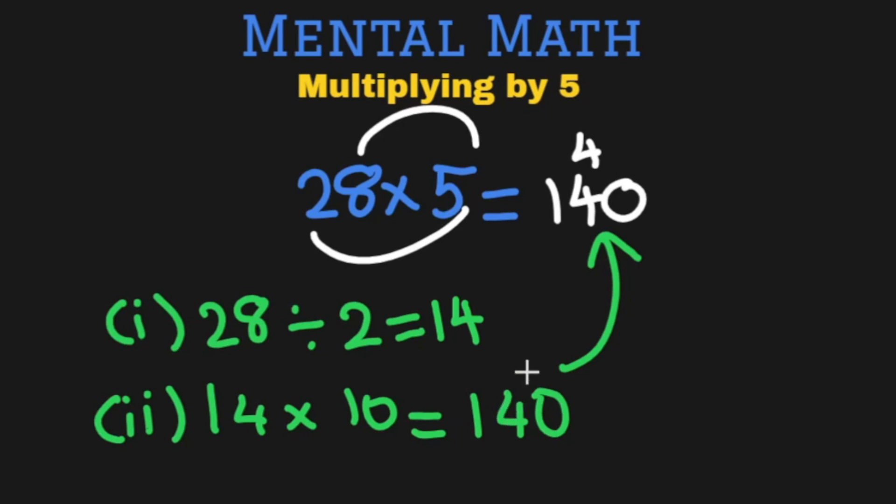And believe you me this is way faster than doing the actual multiplication because dividing by 2 is super easy and multiplying by 10 is just adding a 0 here. So let's do one more question so that you get some more practice.